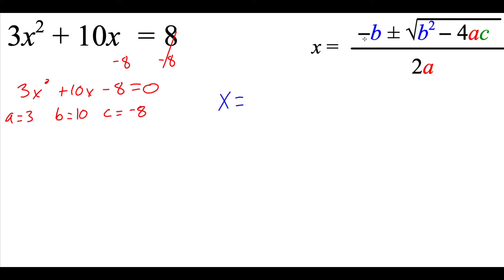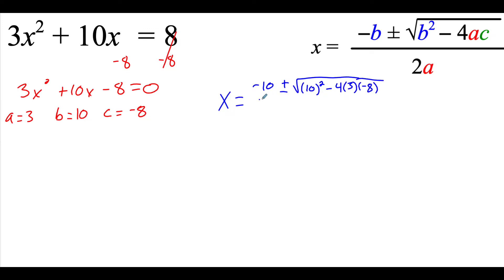So it goes x equals the opposite of the b value — the b value is 10, so the opposite of that is negative 10 — plus or minus the square root of, first we need to do b squared, so I'm going to take 10 and square it, and then minus 4 times that a value, which is 3, times the c value, which is negative 8, and that's all over 2 times the a value of 3.